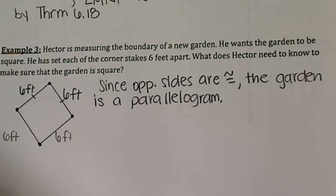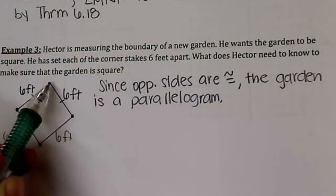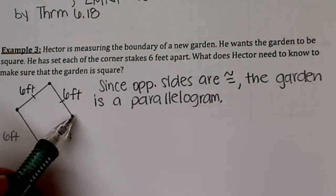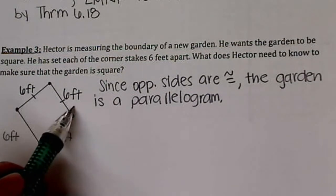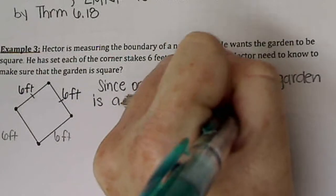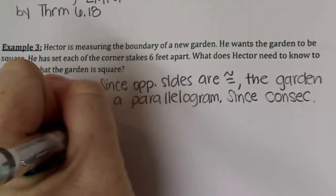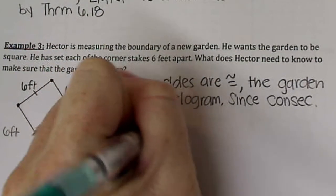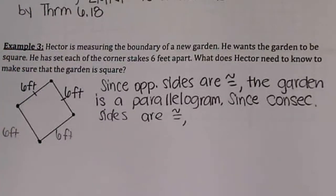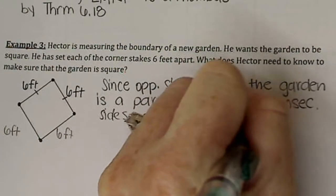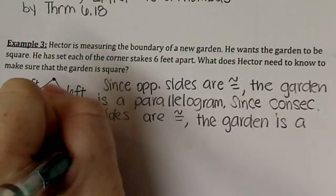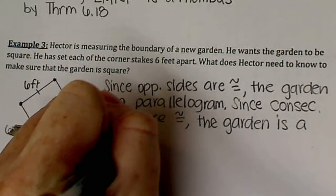Well, in order to be a square, you have to be a rectangle and a rhombus. So the next easiest thing to prove or state is that it's a rhombus because a rhombus has consecutive or sides that are next to it congruent. And we know that these two are congruent. So since consecutive sides are congruent, the garden is a rhombus.